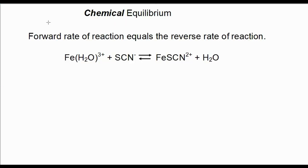By definition, chemical equilibrium means that the forward rate of a reaction equals the reverse rate of a reaction. Here's an example of a chemical reaction that is in equilibrium, or sometimes we could use the words a reaction in equilibrium, or an equilibrium reaction.